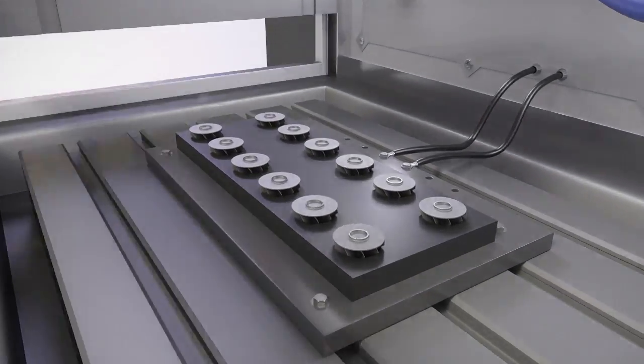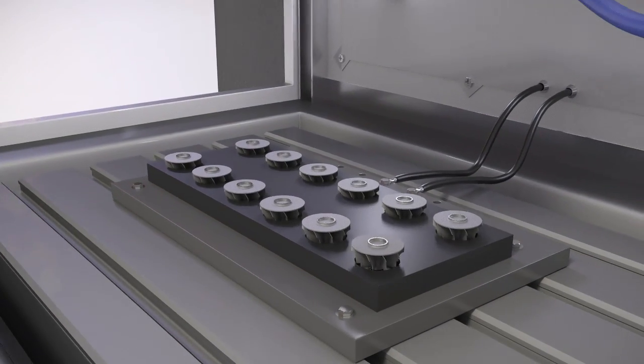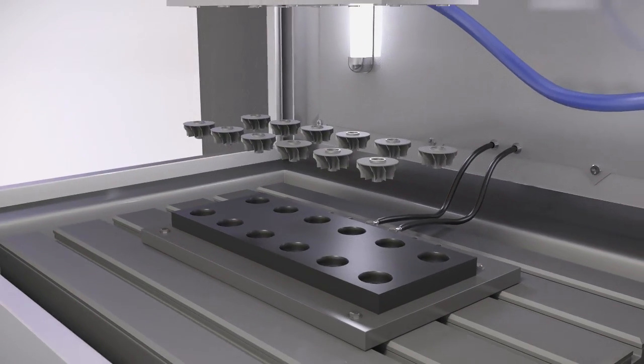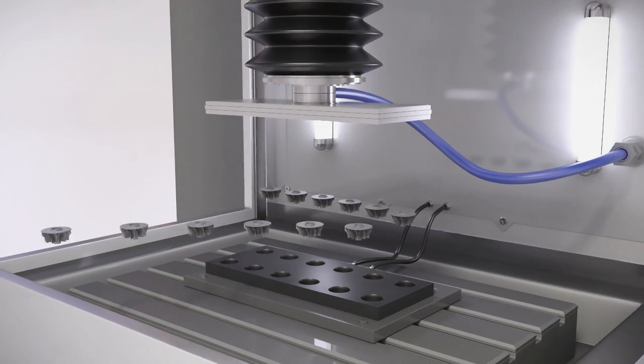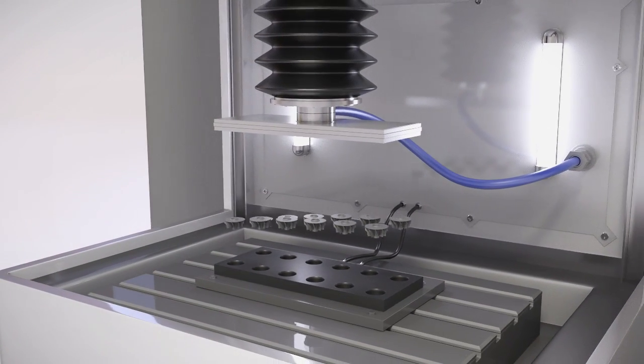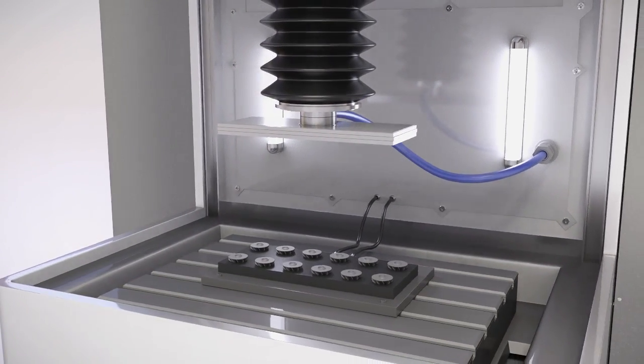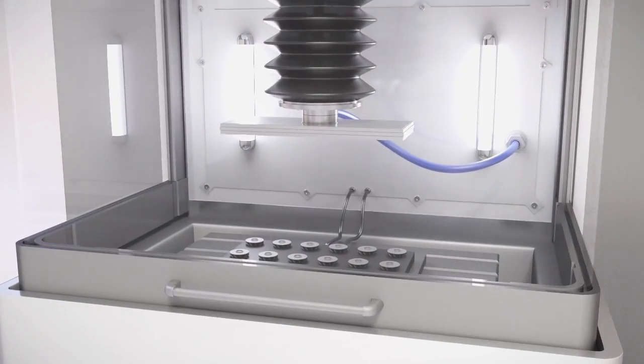This electrode has the inverse form of the desired end product and suffers no principal wear during the process. The material used for the electrode does not have to be harder than the workpiece either, because it makes no contact with the workpiece electrically or mechanically. The metal workpiece in its raw form is dissolved via an electrochemical process to achieve the desired end product.